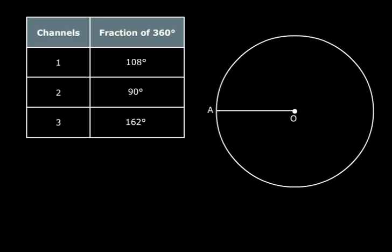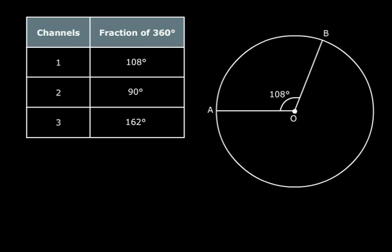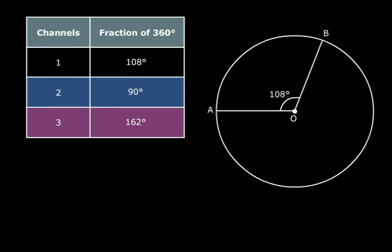Once you have done that, let's move back to our table. The first channel, the corresponding angle is 108 degrees. Take a protractor and draw angle AOB as 108 degrees. That has given you the first sector. Similarly, draw the remaining sectors for angles 90 degrees and 162 degrees. And you've got your pie chart to represent the given data.